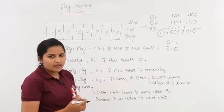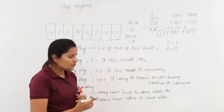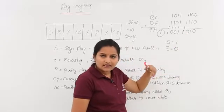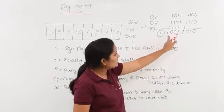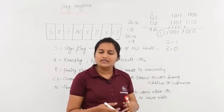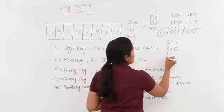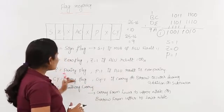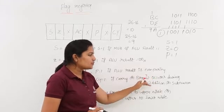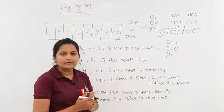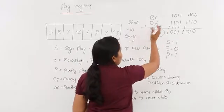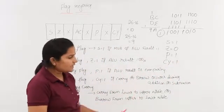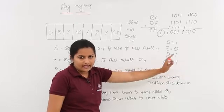Now coming to parity flag: the parity flag will be activated and gives 1 whenever the ALU result is in even parity. Observing the ALU result, there are four 1s in the binary data, which means it is in even parity, so the parity flag is equivalent to 1 for this operation. Coming to carry flag: whenever carry or borrow occurs during addition or subtraction, the carry flag is activated. We are getting a final end-around carry here, so the carry flag is equivalent to 1.